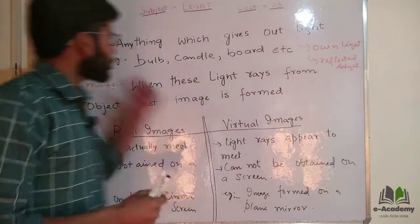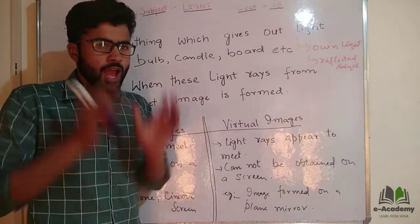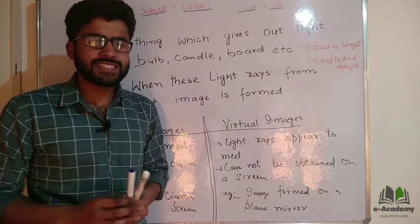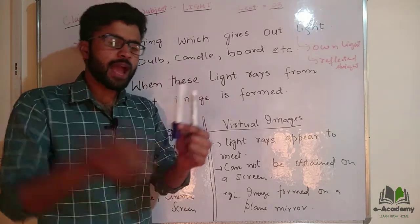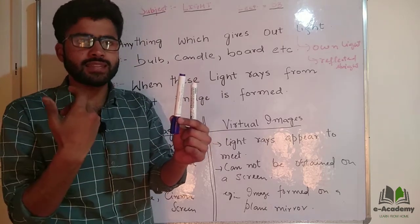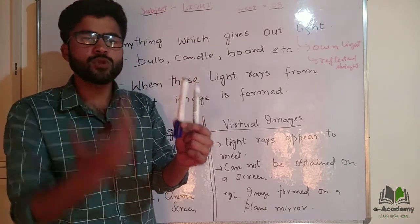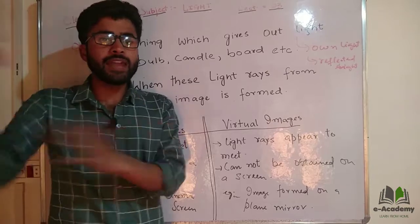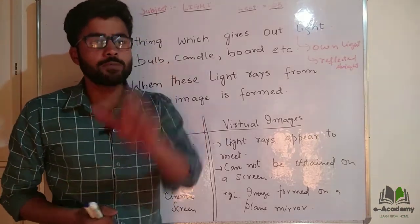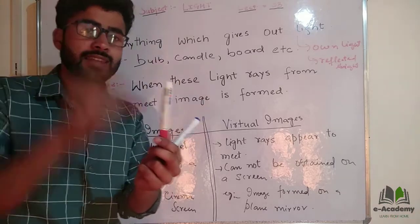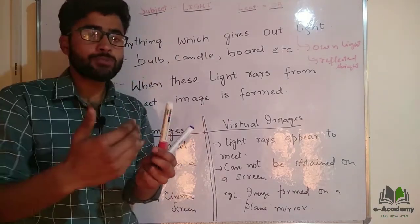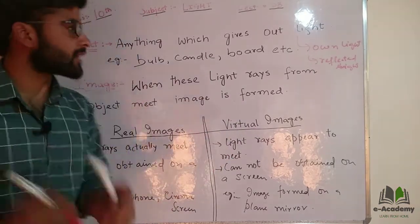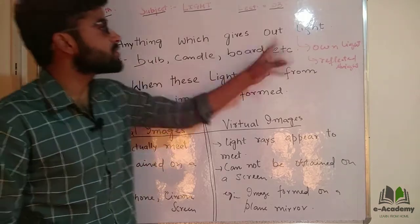So first of all, we will study about object. What is the object? Every thing that reflects light, we call an object. For example, this pen — this pen is known as an object. We have a bulb, a candle. It has light itself and it also reflects light, so we also call it an object. The pen has no light of its own, it reflects light. The bulb and candle have their own light and also give light. So we define object as anything which gives out light.